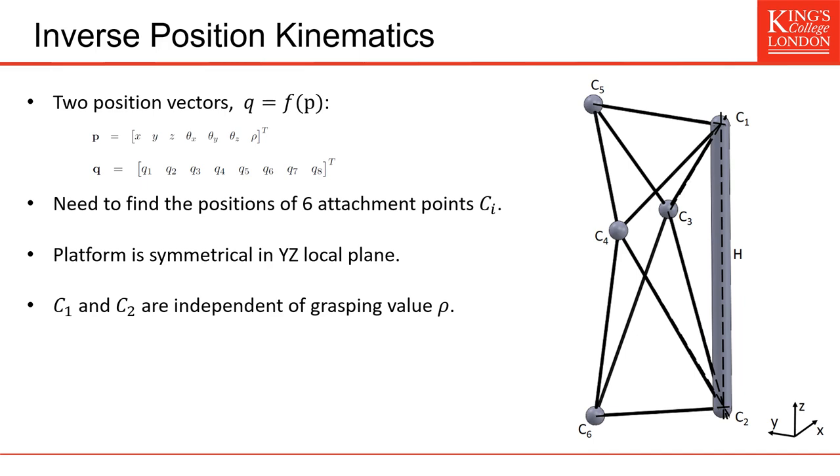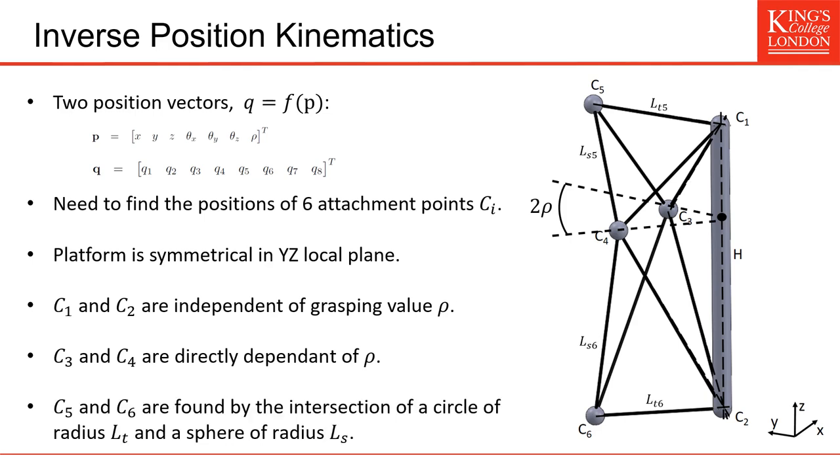C1 and C2, they are independent of the grasping value, so we can directly calculate them from the position of the handle. And C3 and C4, they are directly depending on the grasping, so they are also easy to calculate. For C5 and C6, they can be found at the intersection of a circle of radius LT and a sphere of radius LS. So imagine we want to calculate the position of C5. We can create a circle around C1, which has a radius of LT5, and a sphere centered on C4, which has a radius of LS5. And the connection point C5 will be found at the intersection of this circle and this sphere. We can do the same for the point C6 at the bottom.